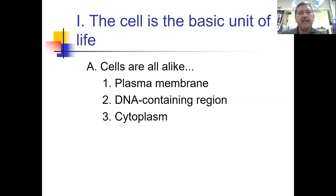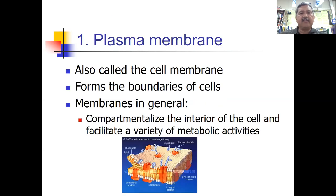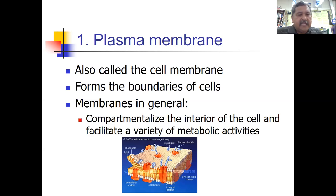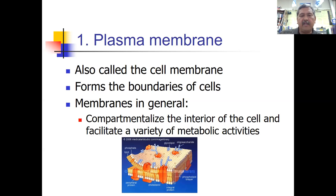All cells are alike in that they have a plasma membrane, a DNA-containing region, and a cytoplasm. The plasma membrane — often called the cell membrane — forms the boundaries of the cell. Membranes in general compartmentalize the interior of the cell and facilitate a variety of metabolic activities in what we call eukaryotic organisms.